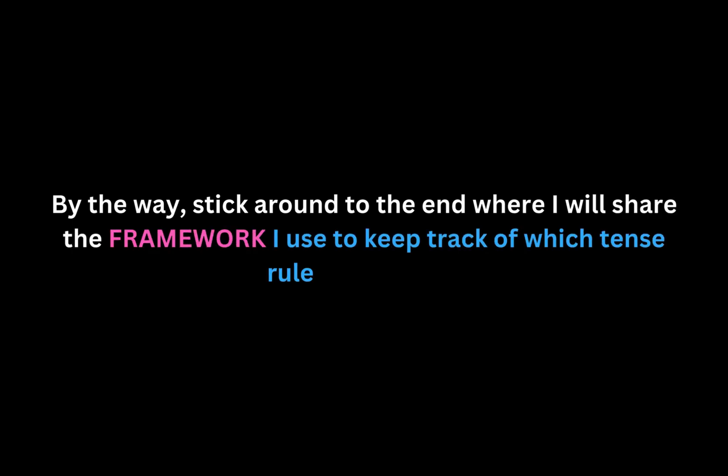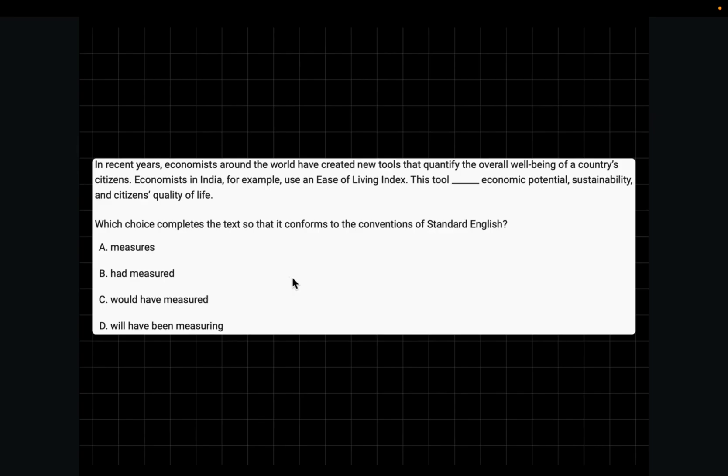Stick around to the end where I will show you the framework I use to easily keep track of which tense rule I should use. The first tense rule is the most common or most basic one, but many people don't know when it is exactly used. Here's an example. In recent years, economists around the world have created new tools that quantify the overall well-being of a country's citizens. Economists in India, for example, use an ease-of-living index. This tool blanks economic potential, sustainability, and citizens' quality of life. So you can see a fact is presented here.